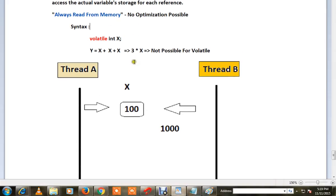Say Thread A has a variable called x and its value is 100. By the time it executes some lines of code, Thread B updates it with 1000.